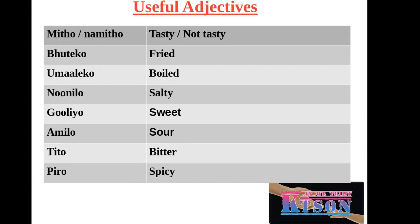Mito means tasty, and na-mito means not tasty — this shows again how adding na- at the beginning makes a word negative. Buteko means fried, umaleko means boiled. Nunilo means salty, gulio means sweet. Amilo means sour, tito means bitter, and piro means spicy.